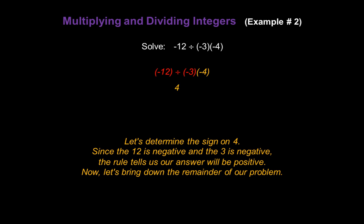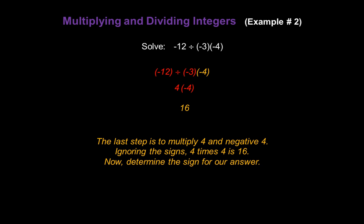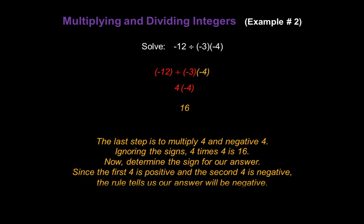Now let's bring down the remainder of the problem. We have to multiply by that negative 4. So the last step is to multiply 4 and negative 4. Ignore the signs — 4 times 4 is 16. Now determine the sign on 16. Since the first 4 is positive and the second 4 is negative, the rule tells us our answer will be negative 16.